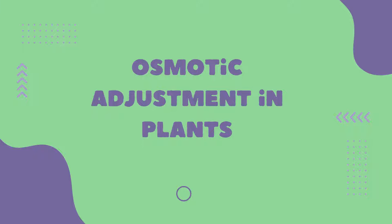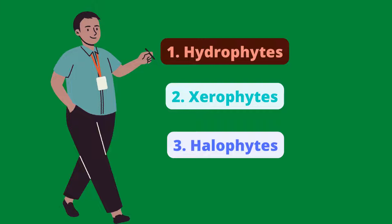Bismillahirrahmanirrahim, Assalamualaikum, welcome to Al-Hassan Vlogs. Dear students, today we will study osmotic adjustments in plants. On the basis of the available amount of water and salts, plants are divided into three groups: number one hydrophytes, number two xerophytes, and number three halophytes.